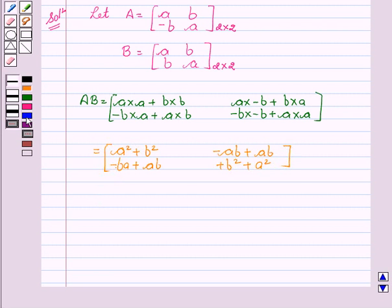This is equal to A square plus B square, 0, then again 0, A square plus B square.